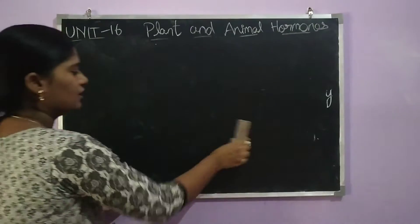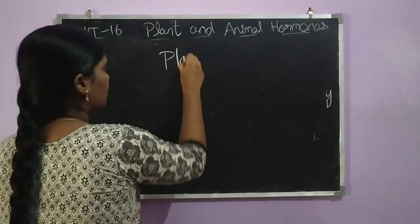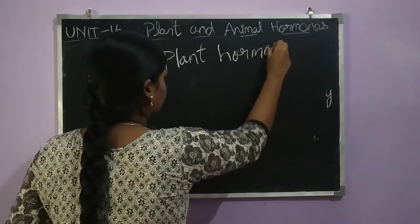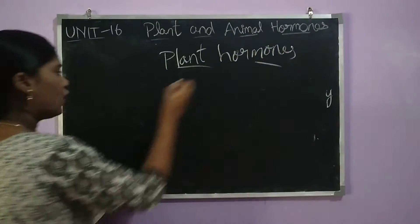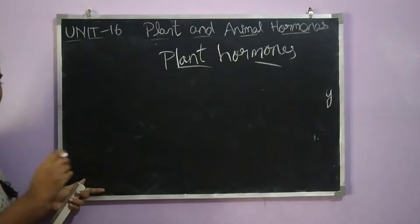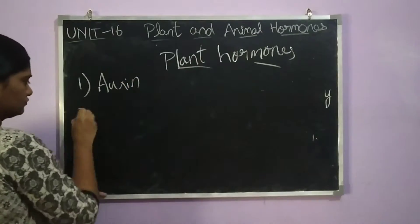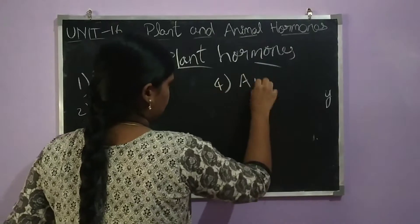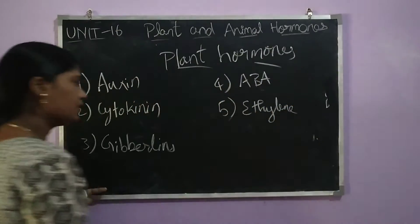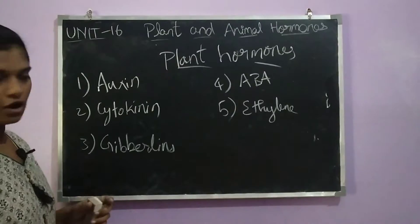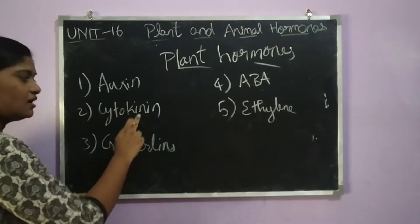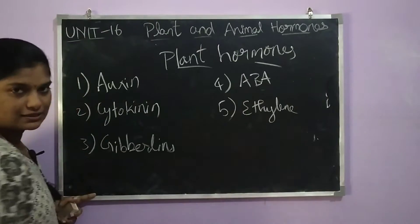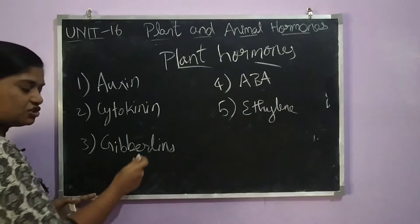So now we are going to see about plant hormones. There are 5 plant hormones. The first we are going to see are: auxin, cytokinin, gibberellins, abscisic acid, and ethylene. We are going to see the first 3 hormones: auxin, cytokinin, and gibberellins.